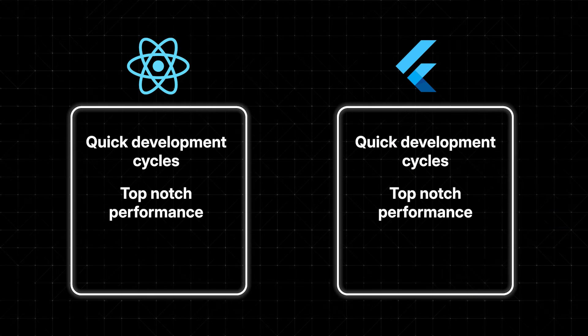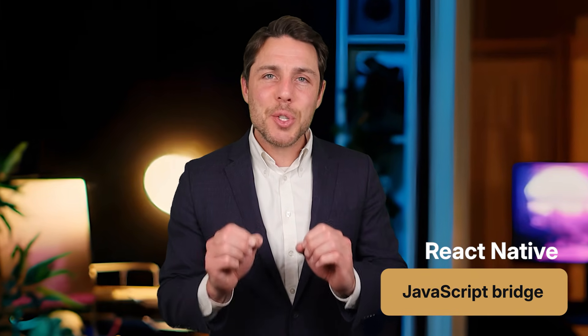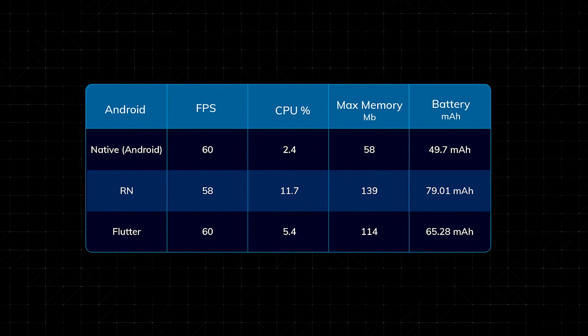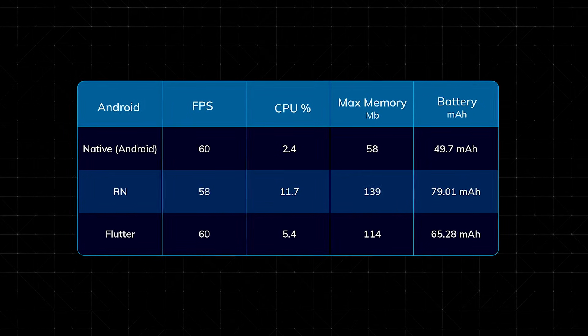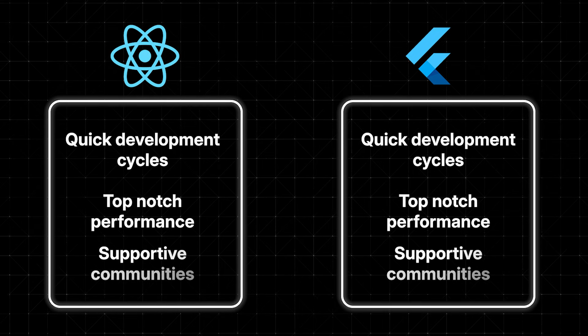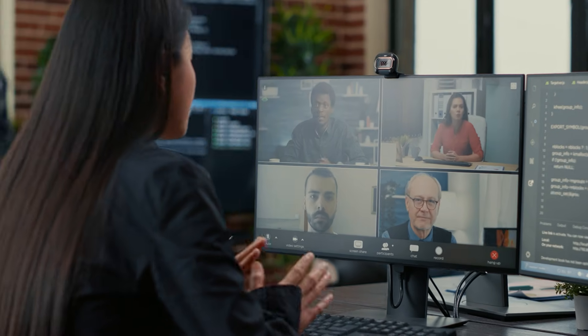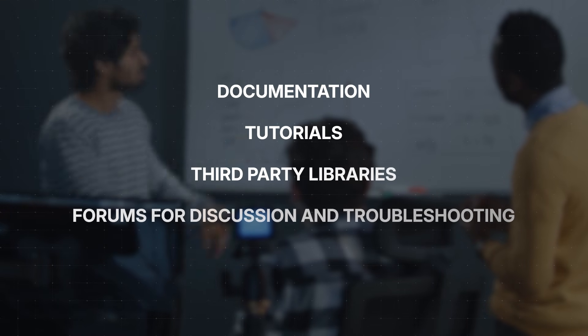Both frameworks also aim for top-notch performance, though they go about it in different ways. Flutter does it through native compilation, while React Native uses a JavaScript bridge. They both work hard to deliver a smooth and responsive user experience, using various optimization techniques to reduce rendering times, improve load times, and manage memory effectively. Lastly, both Flutter and React Native have thriving, supportive communities offering valuable resources including documentation, tutorials, third-party libraries, and forums for discussion and troubleshooting. The active contributions from the community ensure that both frameworks continue to grow and get better over time.